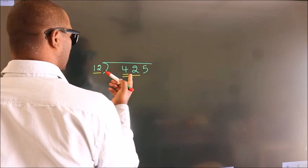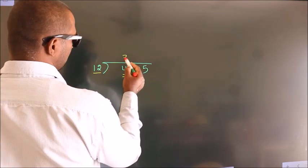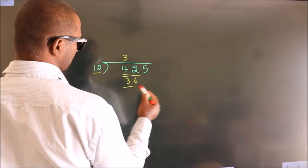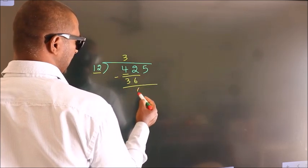A number close to 42 in the 12 table is 12 threes, 36. Now we subtract and get 6.